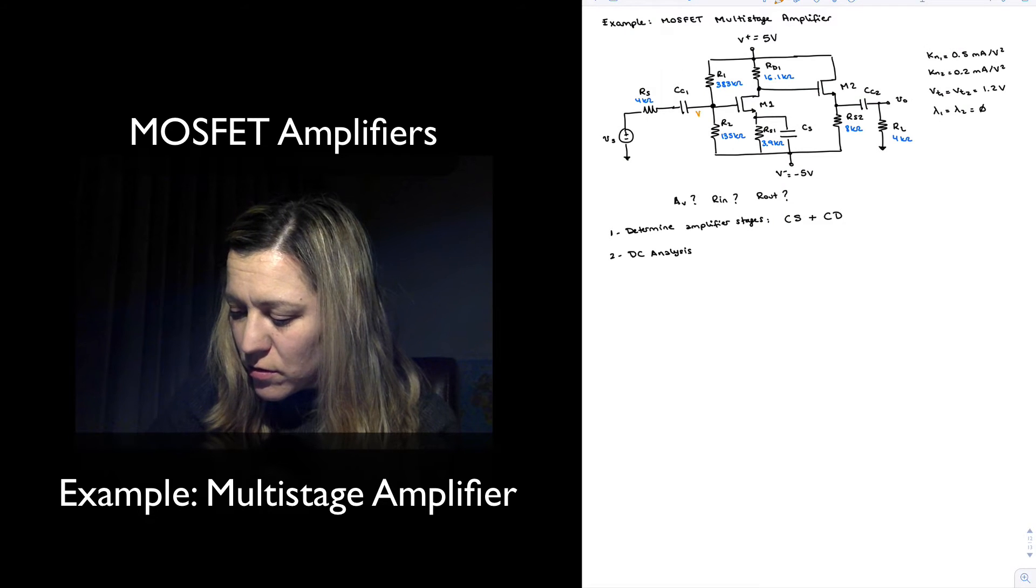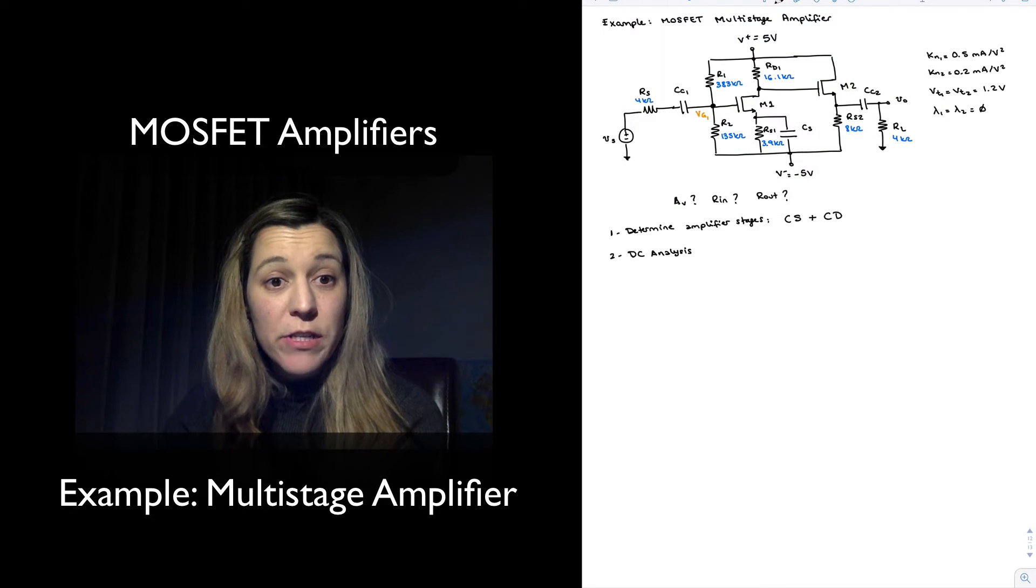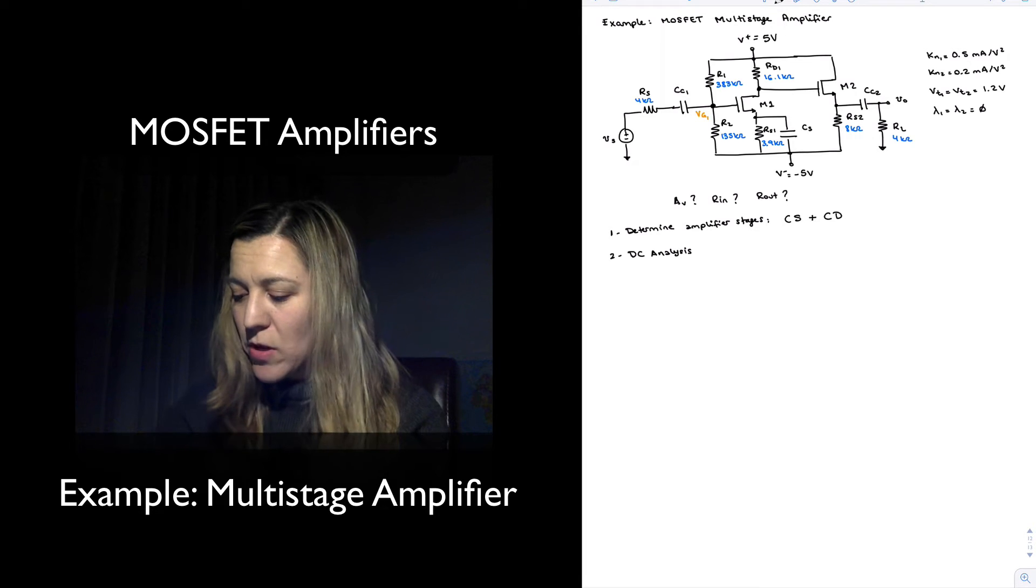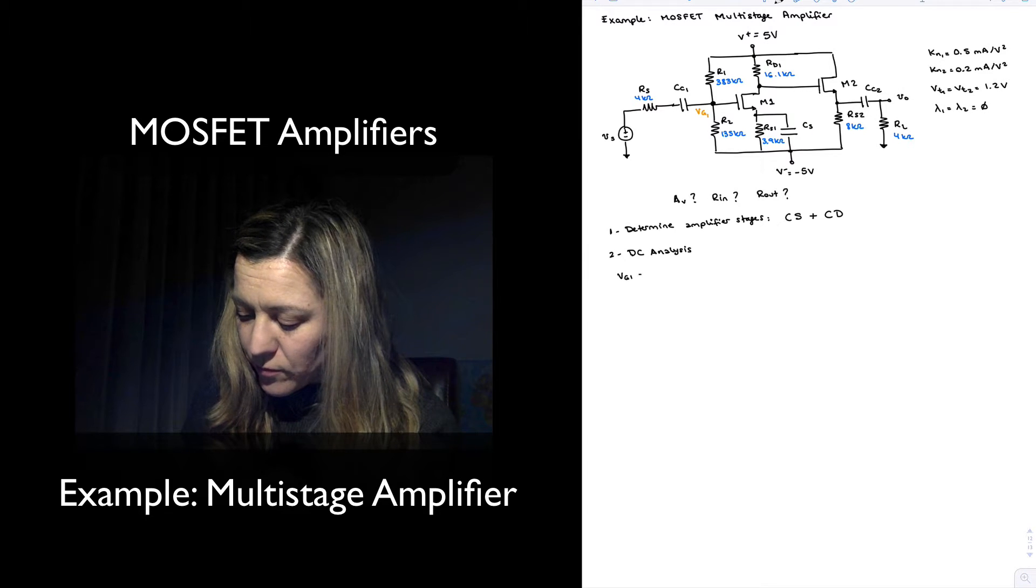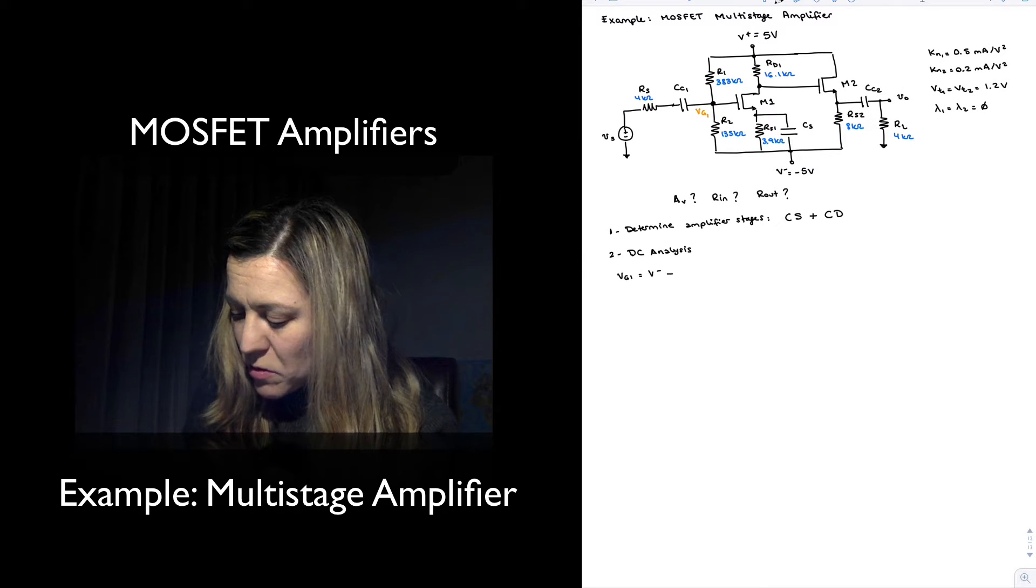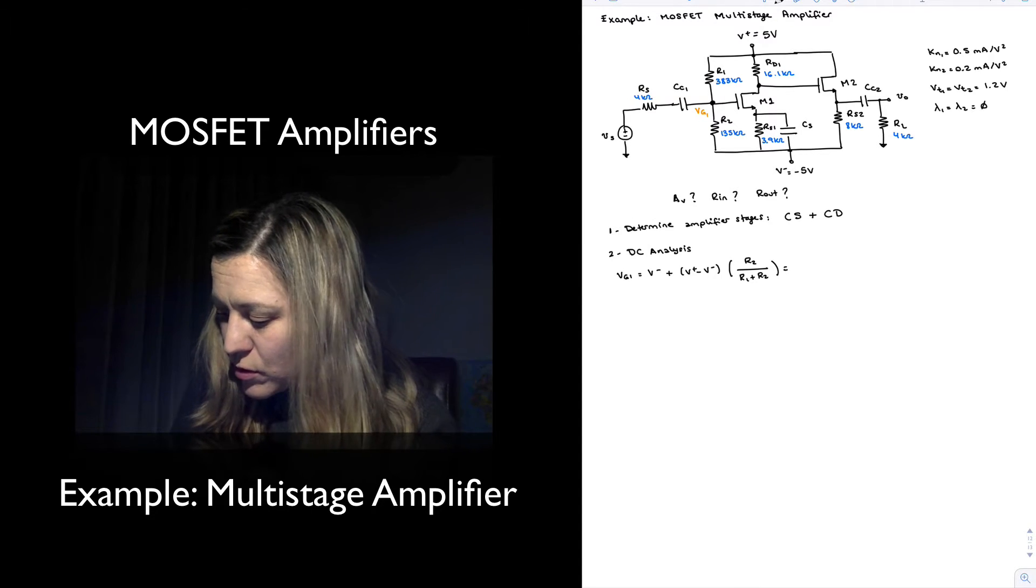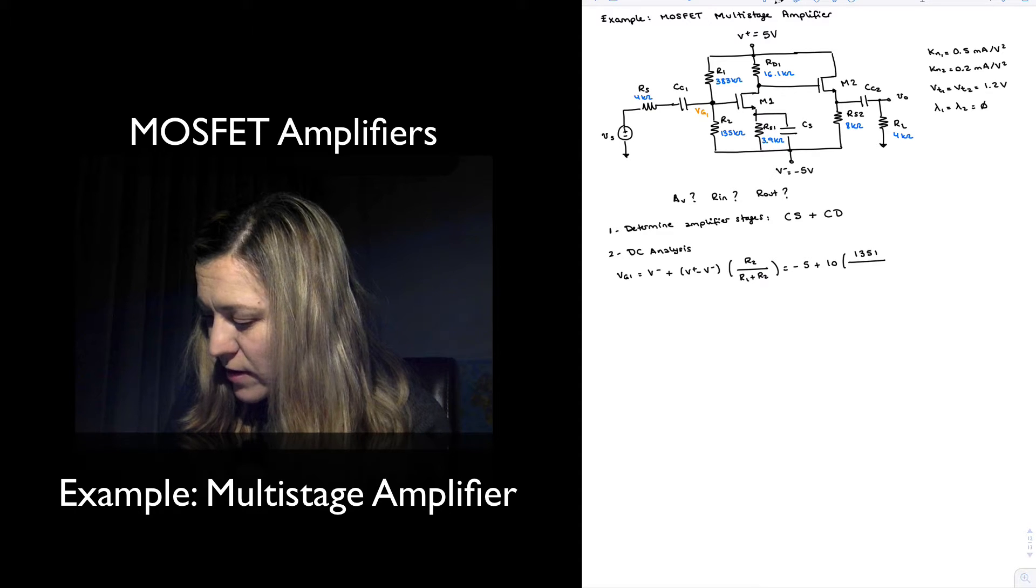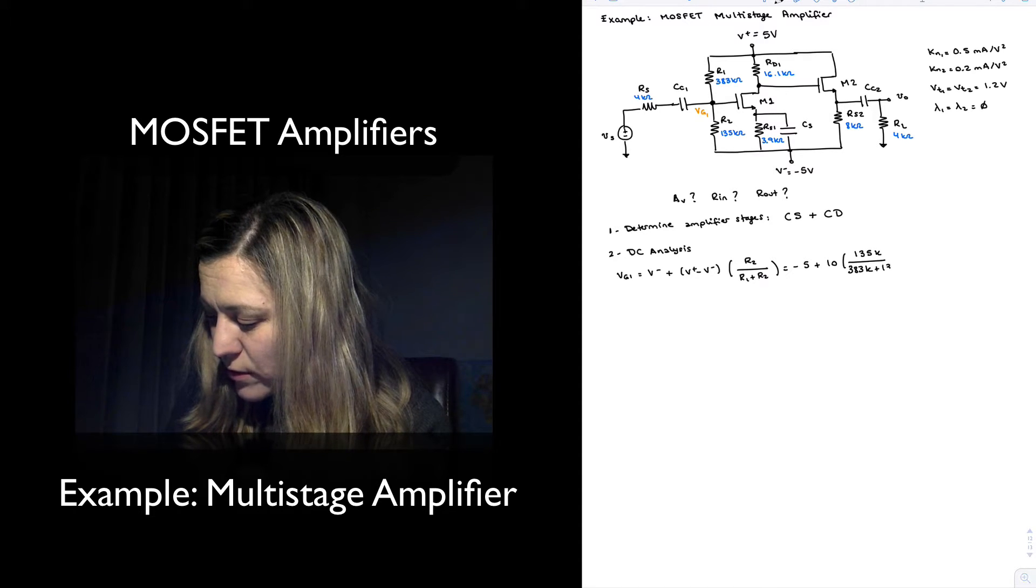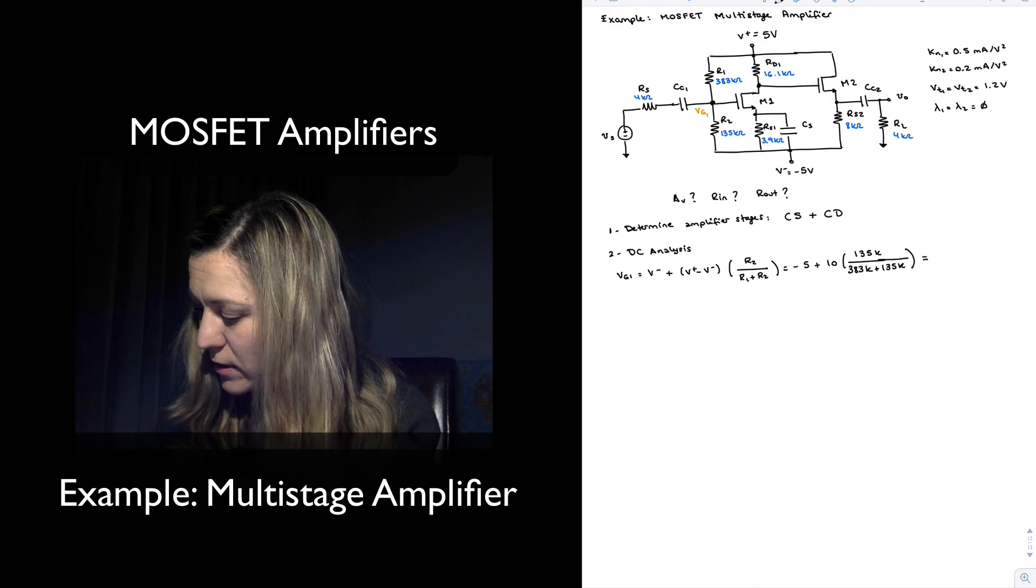With that, I can calculate my gate voltage for transistor M1, VG1, which is a result of voltage division. Notice that the resistance looking into the gate of the transistor is infinity, so there's a perfect voltage divider between R1 and R2. The voltage VG1 will be equal to V minus plus V plus minus V minus times R2 divided by R1 plus R2, or negative 5 plus 10 times 135k divided by 383k plus 135k, which is equal to negative 2.4 volts.